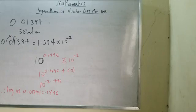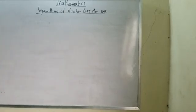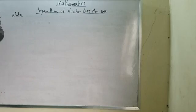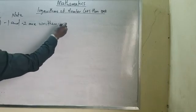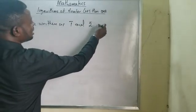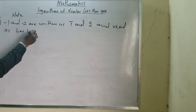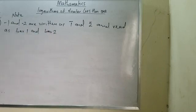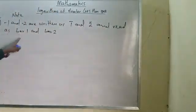Now, note some things before I continue. The first thing: if I have a number, note that minus one and minus two are written as 1̄ and 2̄ — written with a bar over the digit — and read as 'bar 1' and 'bar 2.' This is how we read it. So if I have minus one, we call it bar 1; minus two, we call it bar 2.